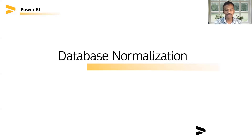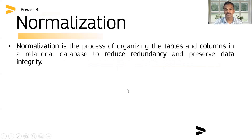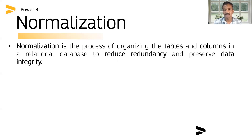What is database normalization? Database normalization is the process of organizing the tables and columns in a relational database to reduce redundancy and preserve data integrity. Redundancy means not duplicating or repeating the same data. Data integrity means that the data is accurate and trustworthy.